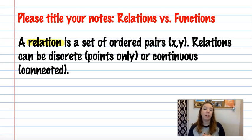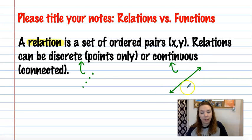A relation is a set of ordered pairs. Ordered pairs are your points that are x comma y. Relations can be discrete, which means they are points only, or continuous, which means they're connected. So think discrete, think of just points on a coordinate plane. Continuous would be a line or some other figure where they're all connected.